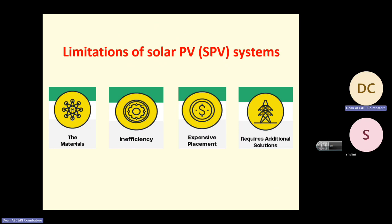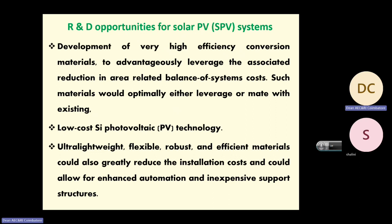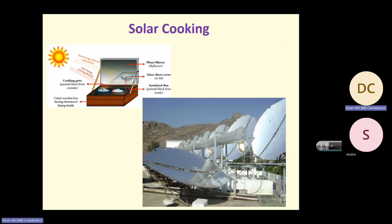R&D opportunities include development of very high efficiency conversion materials to advantageously leverage the associated reduction in area-related balance of systems and costs. Such materials would optimally leverage or be made with existing low-cost silicon photovoltaic technology. Ultra-lightweight, flexible, robust, and efficient material could greatly reduce installation costs and allow enhanced automation of support system structures. Solar cooking is another area everyone is familiar with.